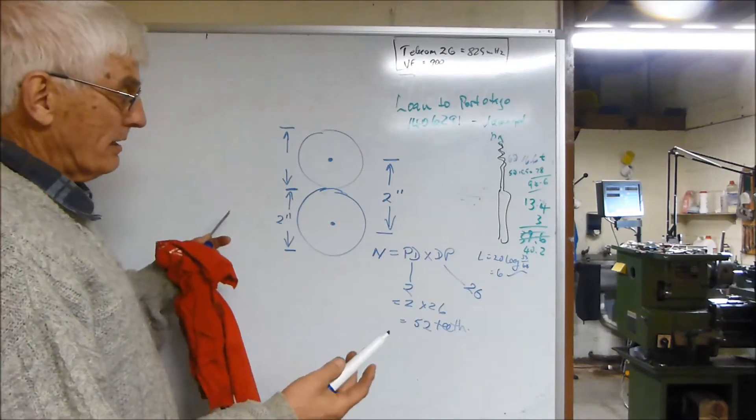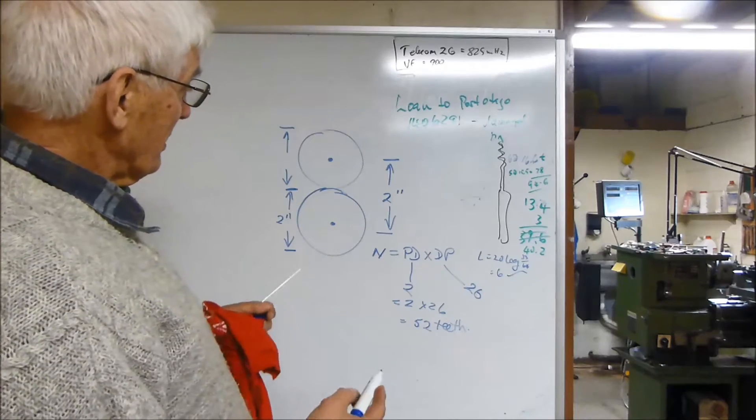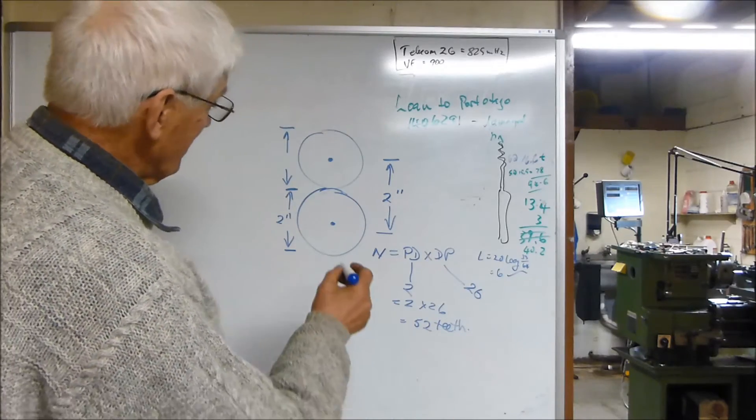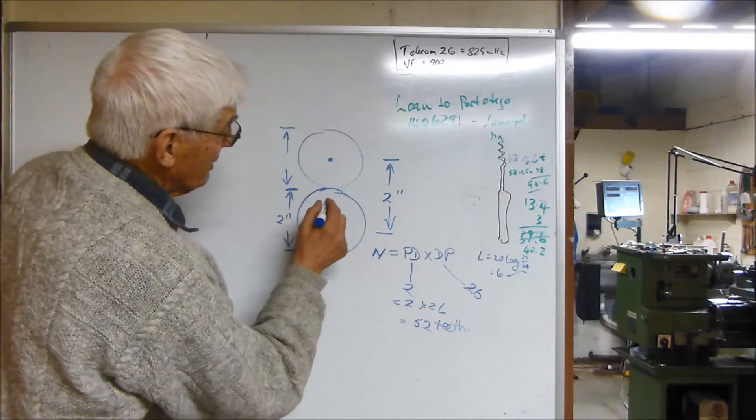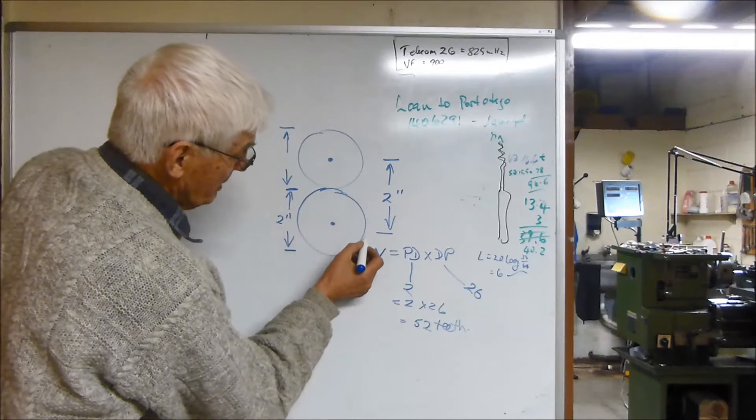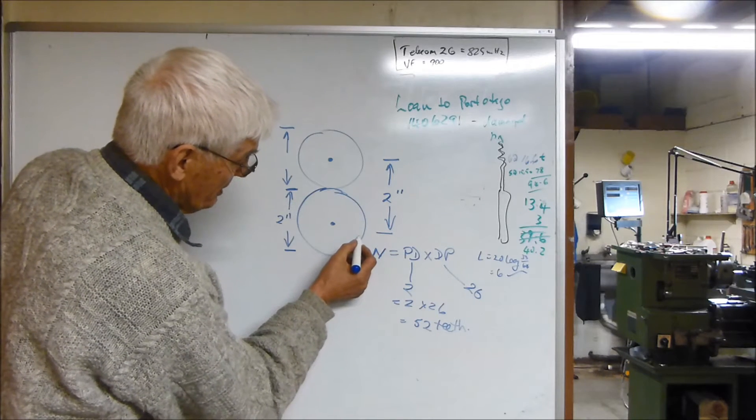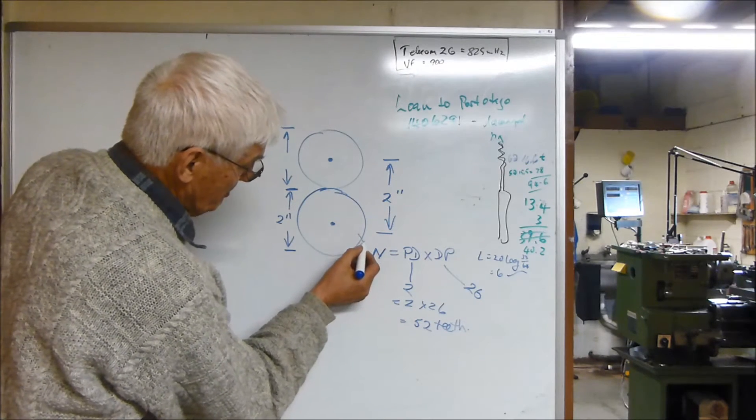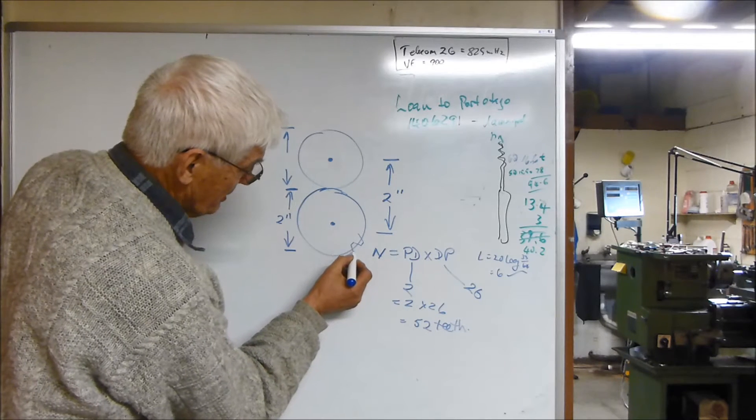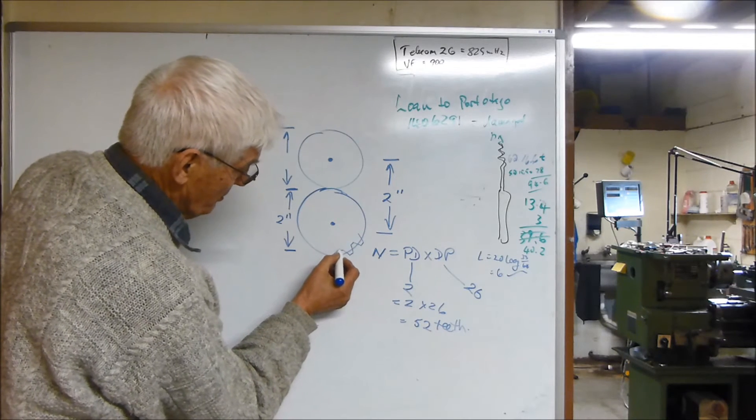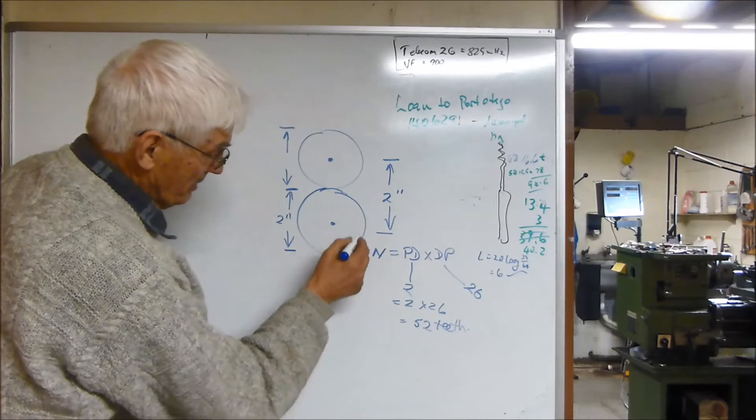So I'm going to have 52 teeth on my gears. But of course the blank that I've got to turn has got to be slightly bigger than this because the teeth, as I explained before, will extend through that diameter.